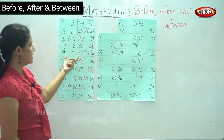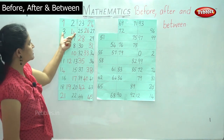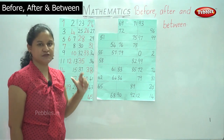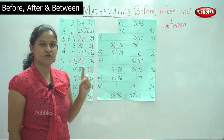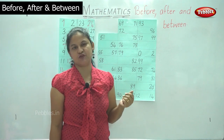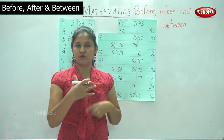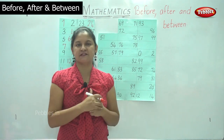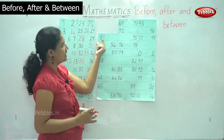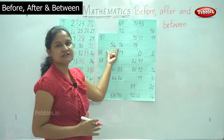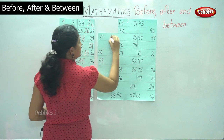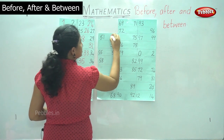So we have seen numbers that come before, after and between. I hope you are finding it easy. We will move on to the next group of numbers. We have number fifty-one, and what comes after fifty-one is number fifty-two.